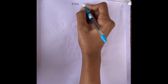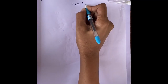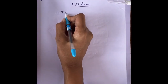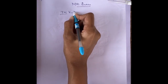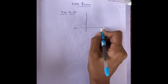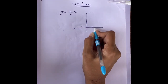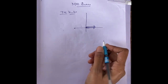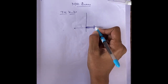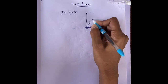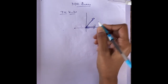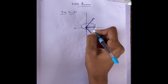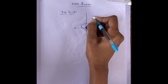Coming to MRA basics. Yesterday we learnt about the transverse magnetization vector. This transverse magnetic vector moves in phase with the precessing protons.